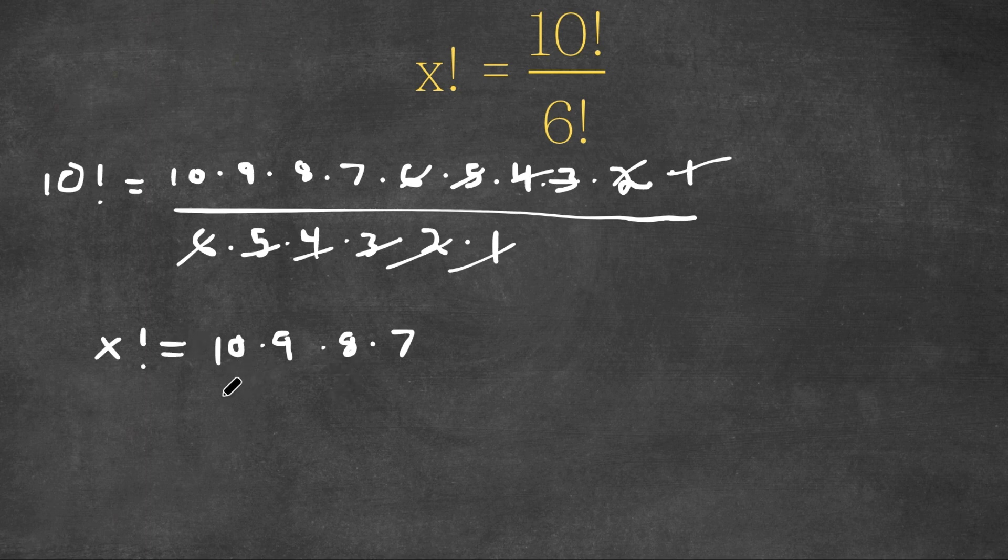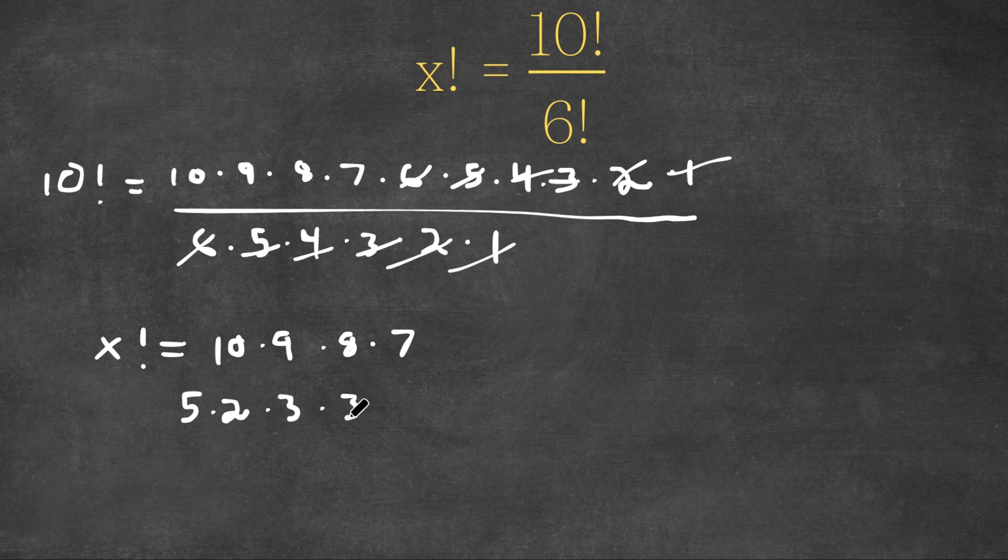Now, 10, this is equal to 5 times 2. 9 is equal to 3 times 3. 8 is equal to 4 times 2. And 7 is just 7. We can't simplify that anymore.